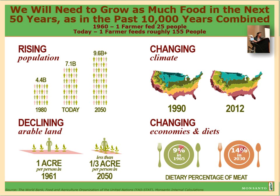We're going to need to grow as much food in the next 50 years as in the past 10,000 years combined. Currently we have over 7 billion people on the planet and by 2050 we'll have over 9 billion — and in some reports I've seen close to 10 billion. So that's a lot of people.